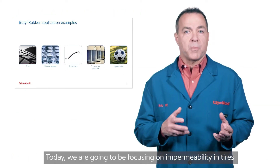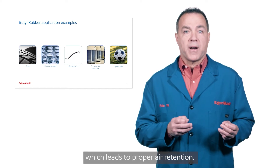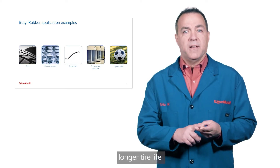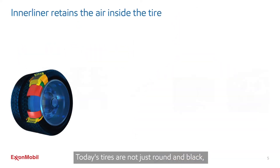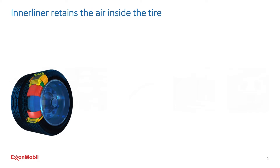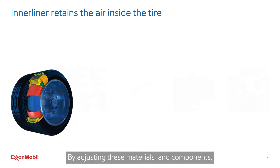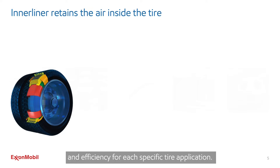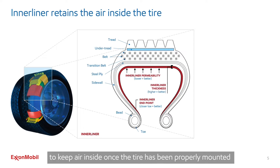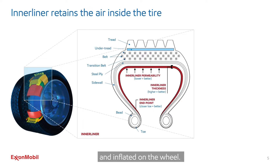Today, we are going to be focusing on impermeability in tires which leads to proper air retention. Proper air retention means better fuel economy, longer tire life, and higher personal safety when traveling. Today's tires are not just round and black, but they are a very complex composite of multiple components, materials, and manufacturing processes. By adjusting these materials and components, tire designers can tune and tweak the balance of a tire's handling, durability, and efficiency for each specific tire application. Regardless of the specific tire model, it is the job of the inner liner to keep air inside once the tire has been properly mounted and inflated on the wheel.